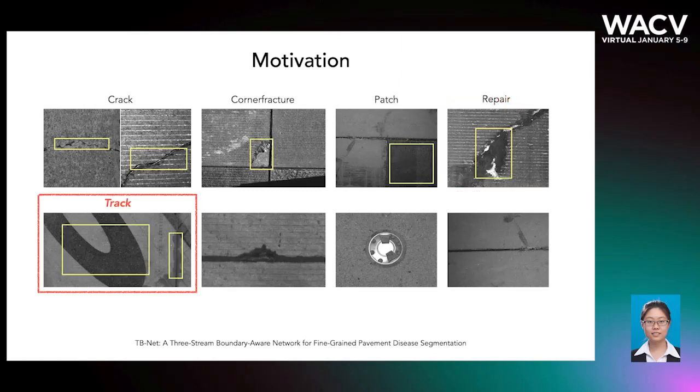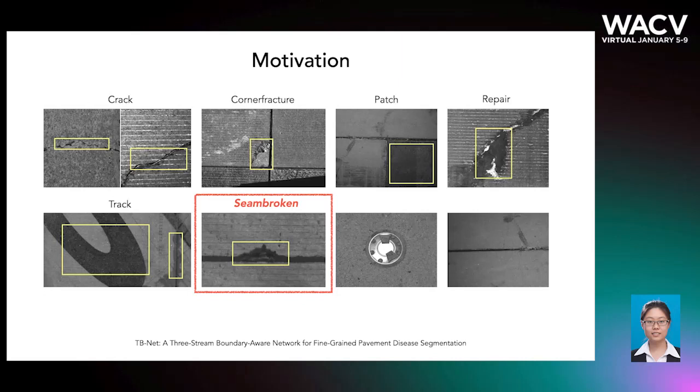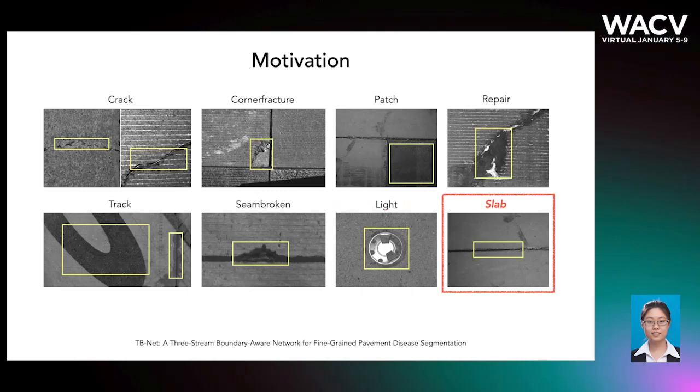Markings that have ring line shapes and commonly seen water-oil stains are all classified as track. Seen broken is the small damaged area along the edge of a block. Light is the ground lighting equipment that is especially deployed at airports. Slap is the normal gap between two segmented or asphalt blocks. For the above diseases, our goal is to automatically segment them in a single model.